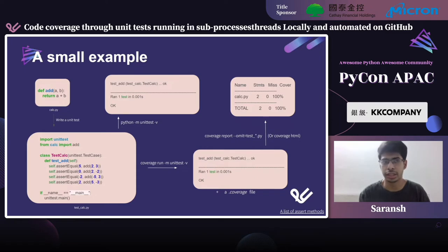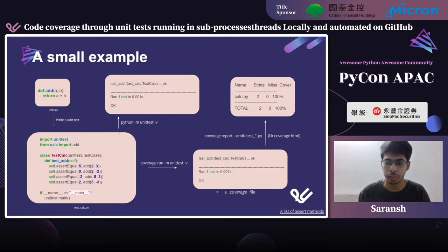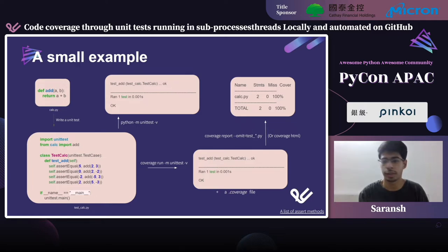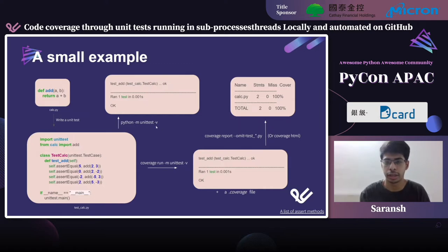The last two lines tell unittest to run the tests when running the module itself — a standard way of running unit tests in Python. The command 'python -m unittest' starts all unit tests, recursively finding files starting with 'test'. After finding all tests, it runs them and shows output. With the -v flag, it tells you which test is running and shows 'OK' if it passes. We ran one test and it went well.